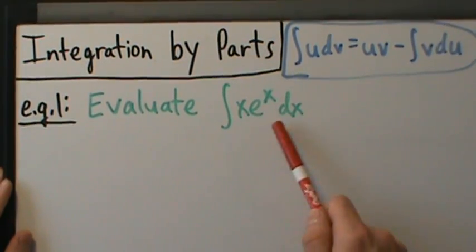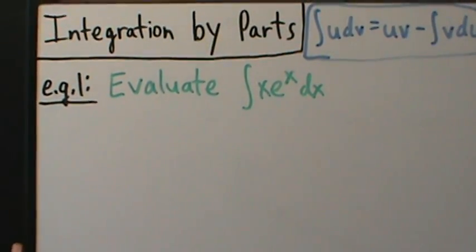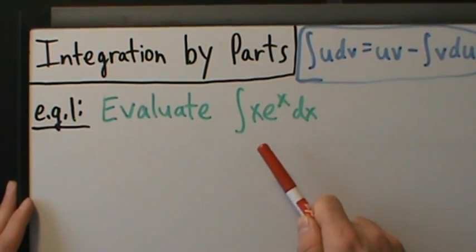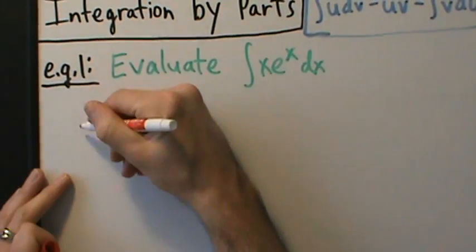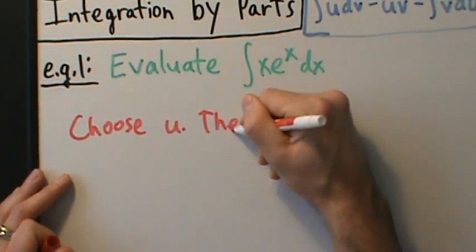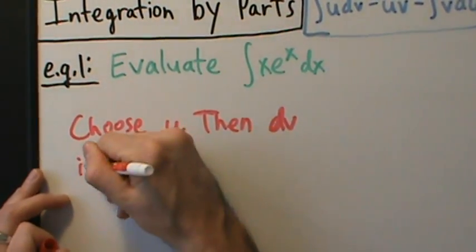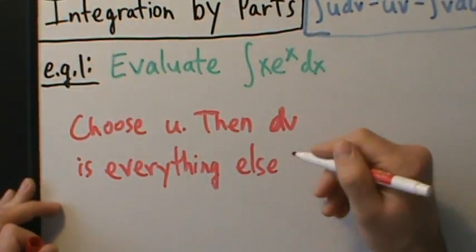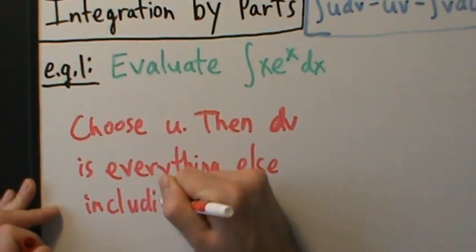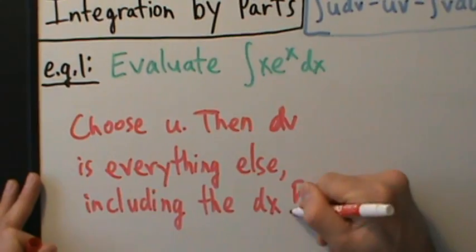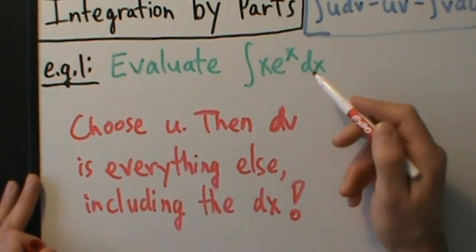We have to choose u to be something in the integral. This is a little bit different from substitution, where you choose u and look for a function whose derivative appears. Here, you look at the integral and ask what should u be so that I could use the integration by parts formula. Once you choose u, dv is automatically everything else in the integral, including the dx.